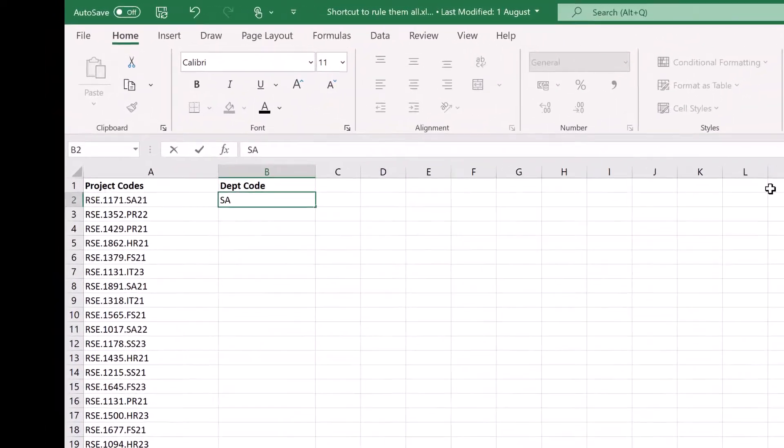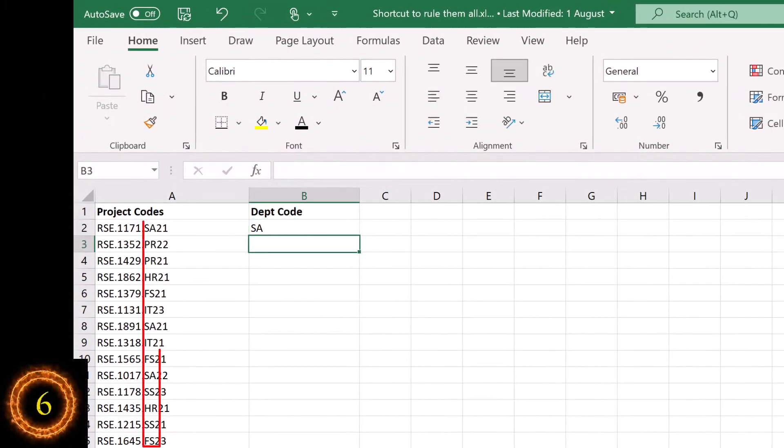You can use it on codes like this. You just want to extract a small part of it like the department code for this example.